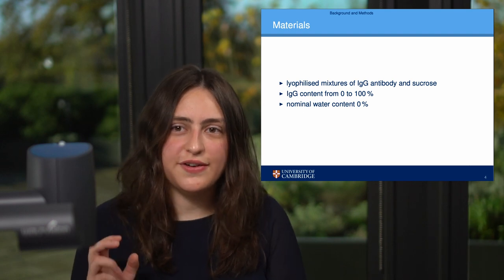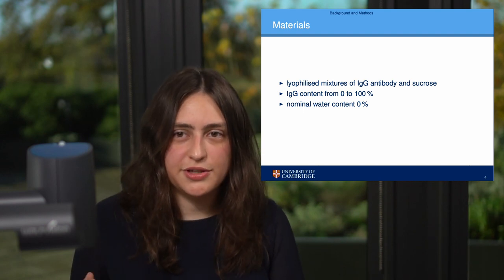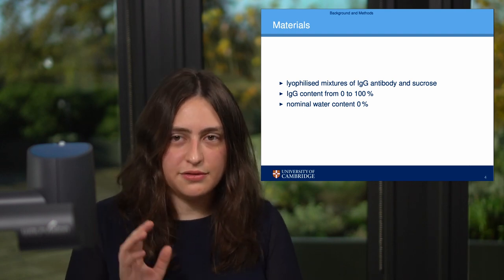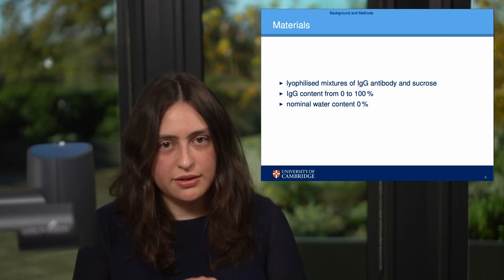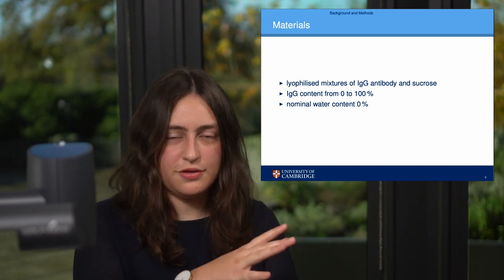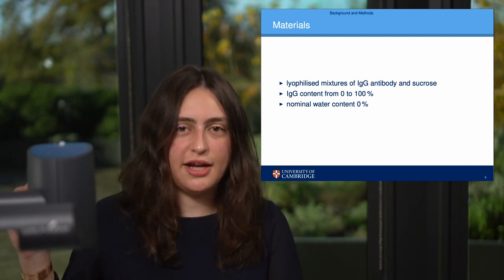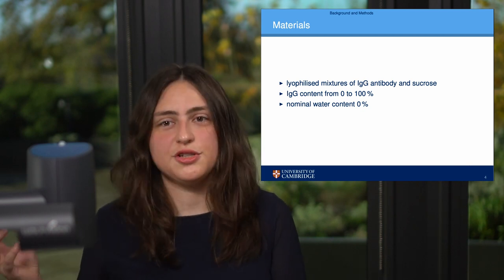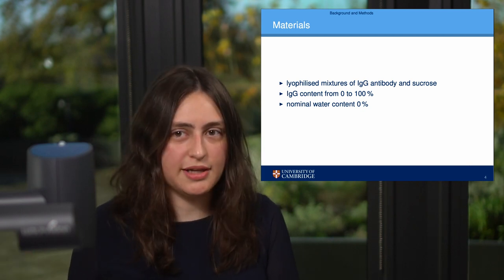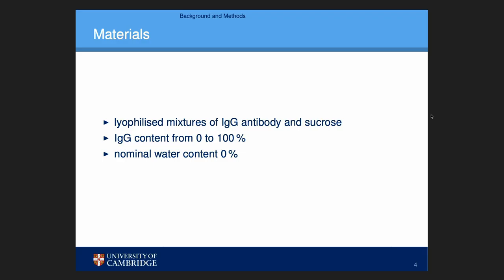What we do is vary the antibody content from zero — which would mean a pure sucrose sample — to 100%, which is a pure protein sample. All the while we keep the nominal water content very, very low.